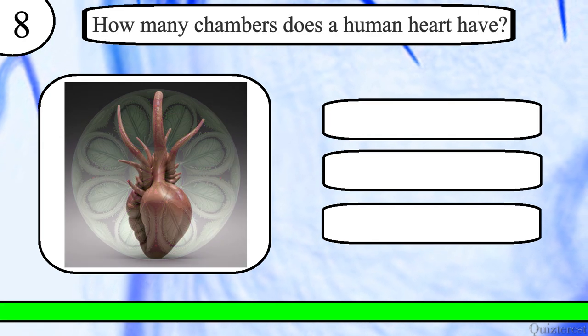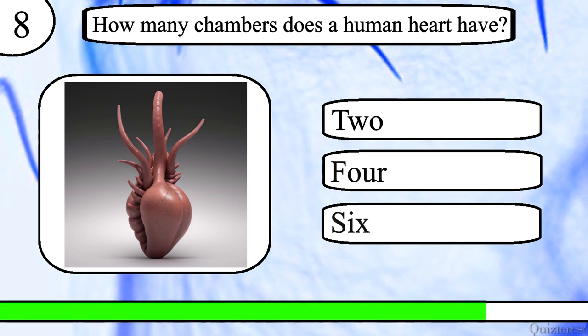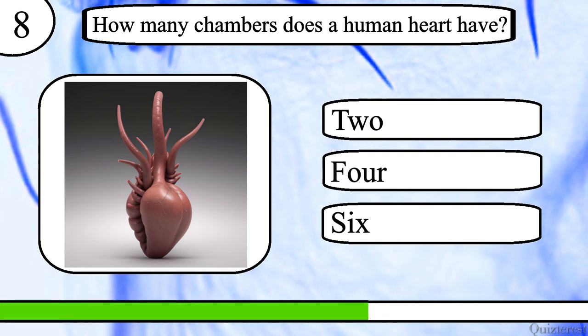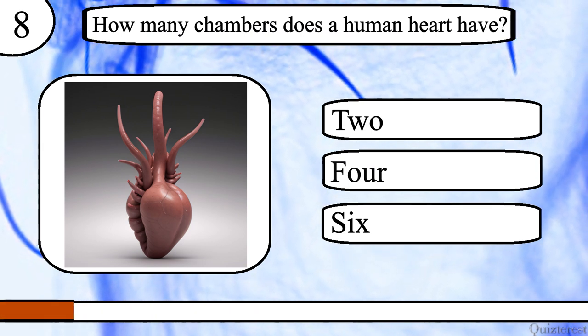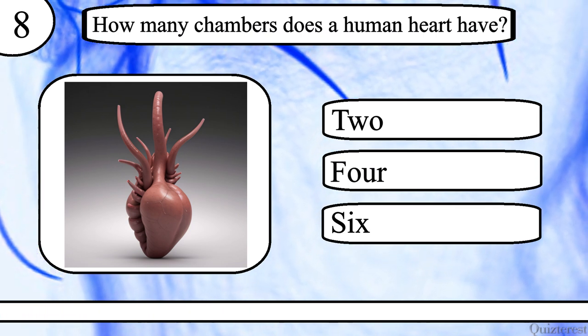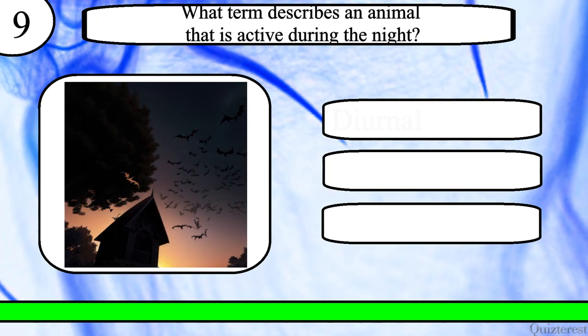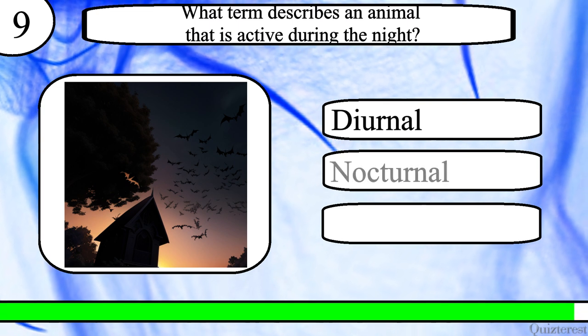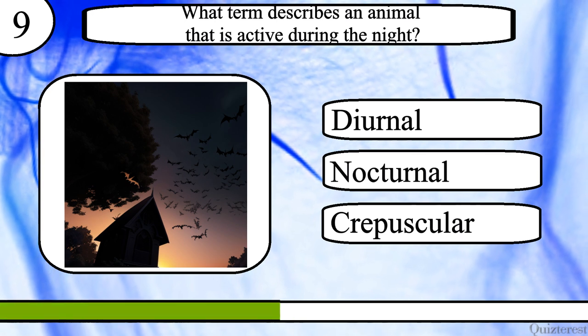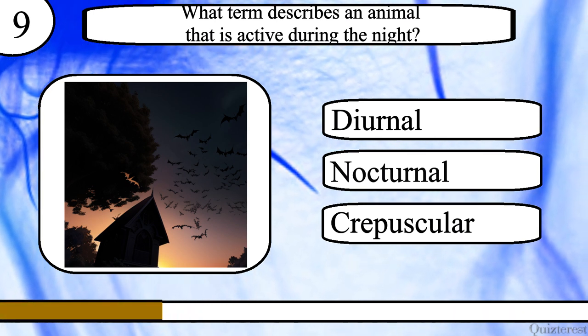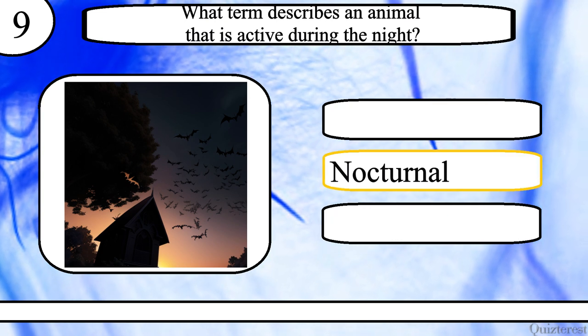Question 8. How many chambers does a human heart have? Two, four or six? The correct answer is four. Question 9. What term describes an animal that is active during the night? Diurnal, nocturnal or crepuscular? The correct answer is nocturnal.